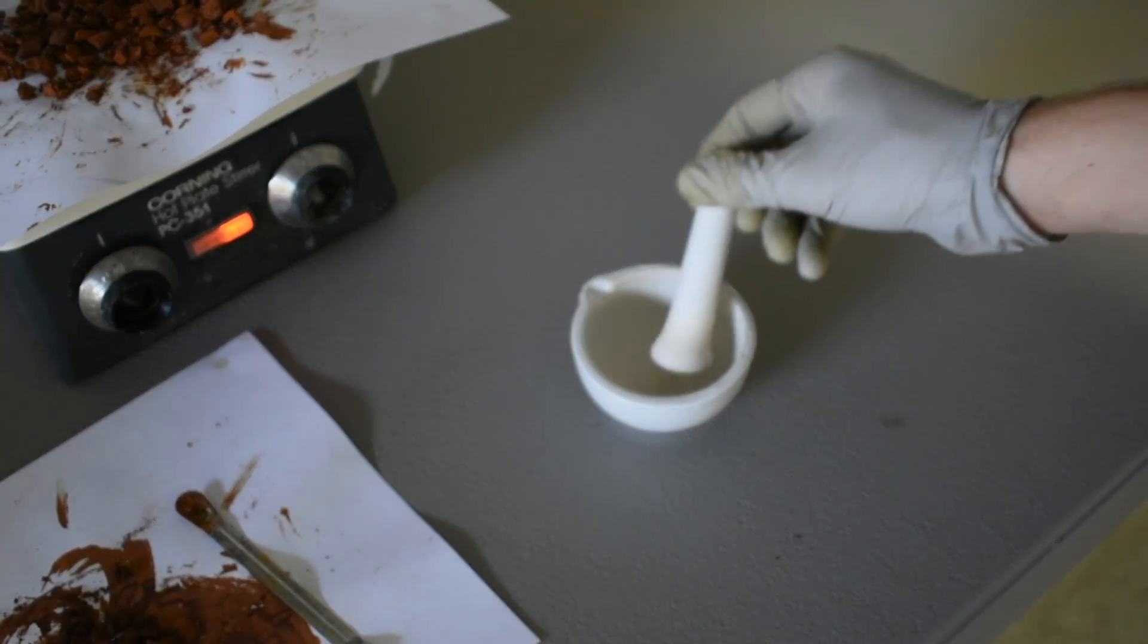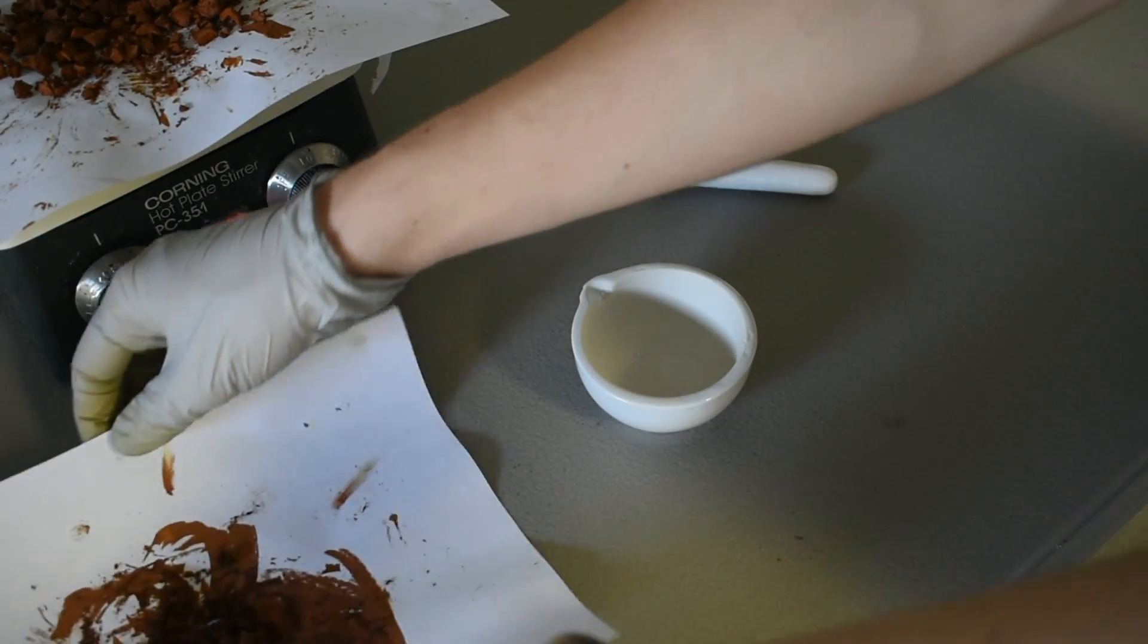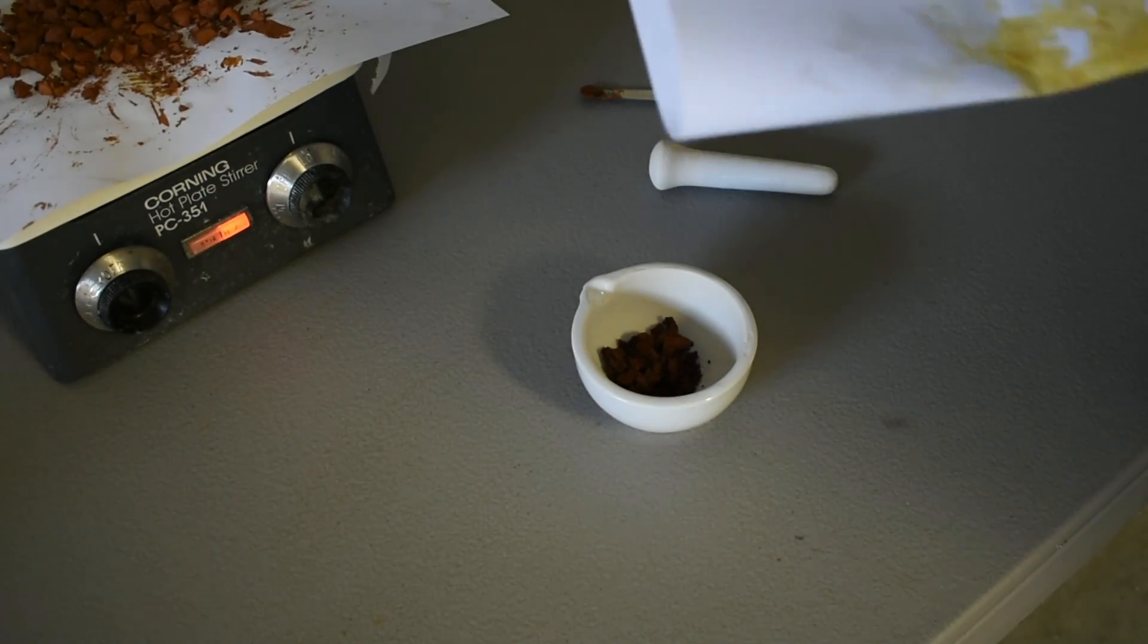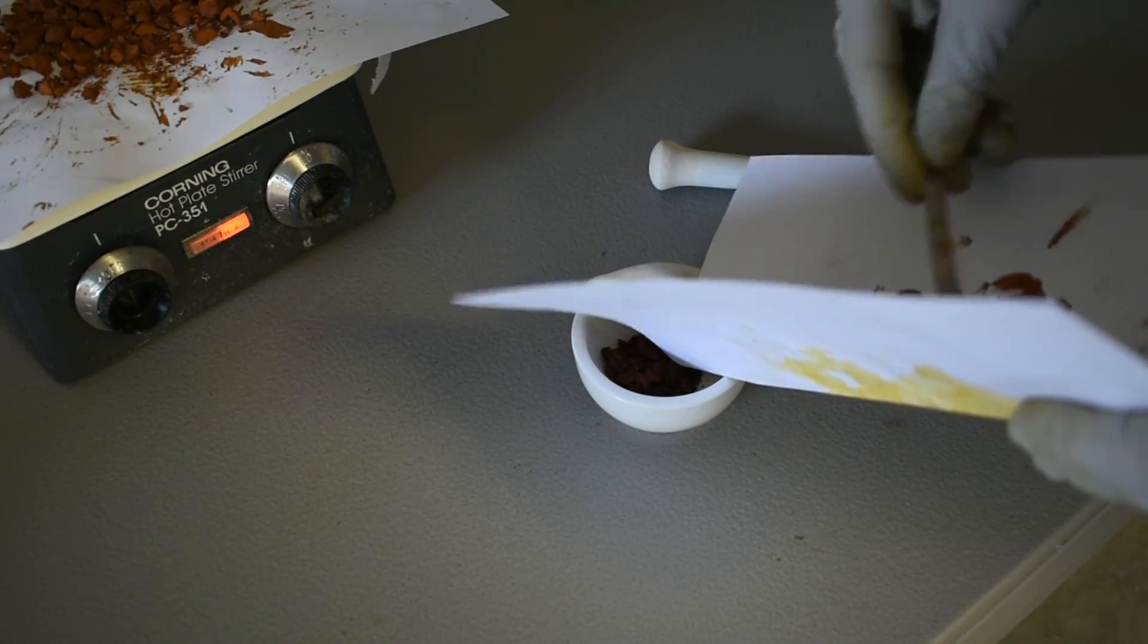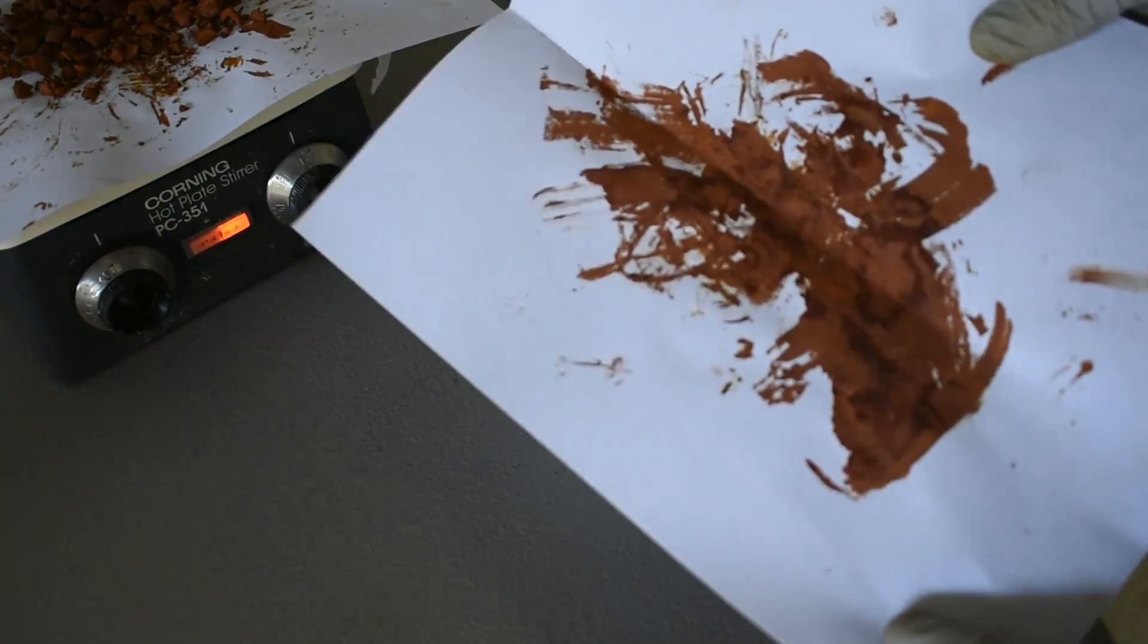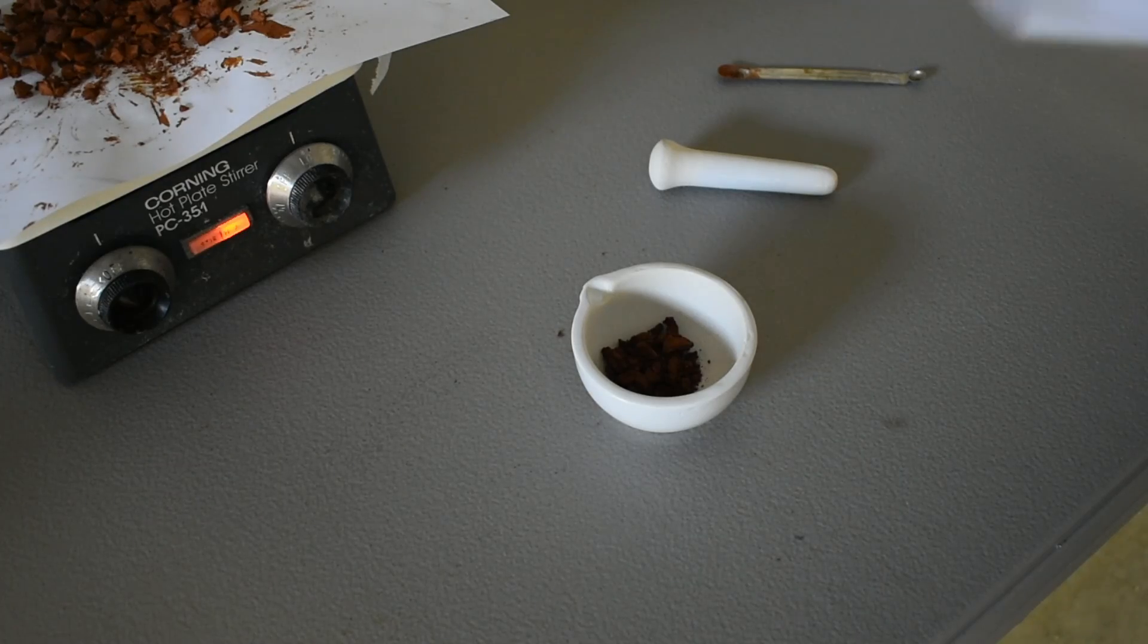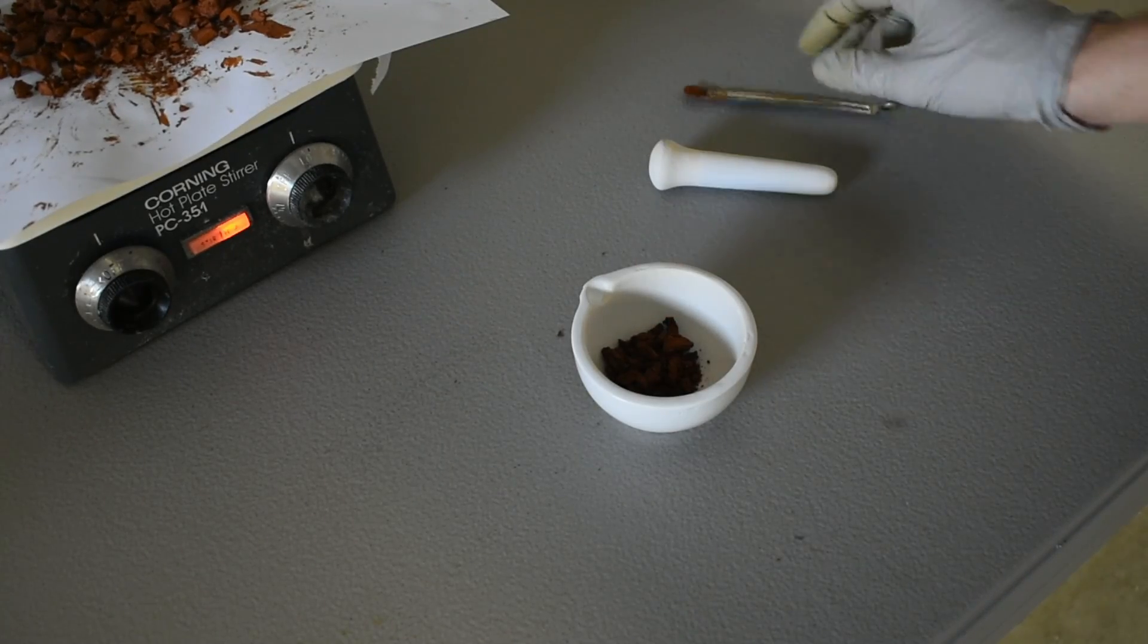Alright, we got our fresh, clean mortar and pestle. I'm just going to pour some of our product in here. Make sure you dispose of this properly. Chromium heavy metal, toxic. You cannot just throw it away. Make sure you neutralize it with something like sodium metabisulfite. So I'll just put this over in my waste area, and we can get to crushing.